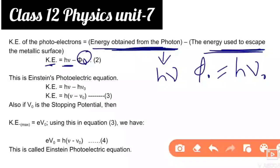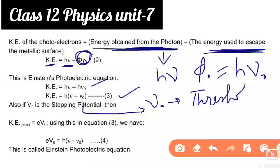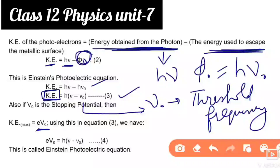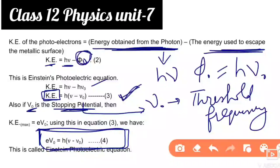The value of φ₀ equals hμ₀. Now substitute φ₀ in place of hμ₀. Taking h as common: Kinetic Energy = h(μ − μ₀), where μ₀ is the threshold frequency. Now replacing kinetic energy with eV₀ (where e is electron charge and V₀ is stopping potential): eV₀ = h(μ − μ₀). This is Einstein's photoelectric equation.